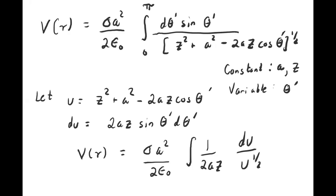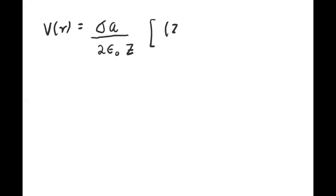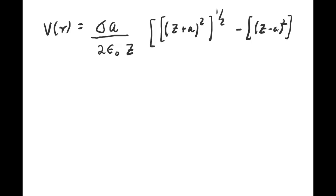I'll leave you to complete this — it will be part of problem set 8. You will find that the electrostatic potential V equals sigma times the radius a divided by 2 epsilon-naught z, times the quantity [(z plus a) squared to the one-half minus (z minus a) squared to the one-half]. I ask you to prove this.